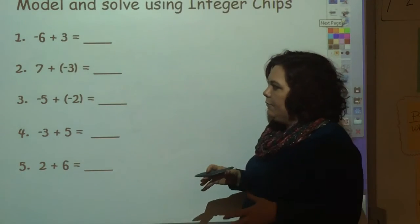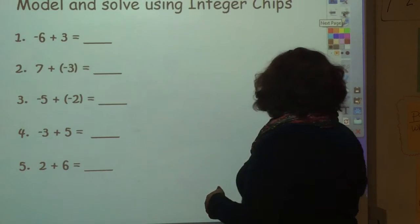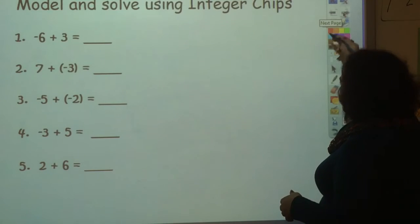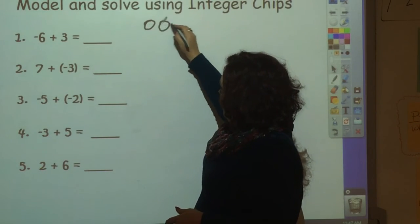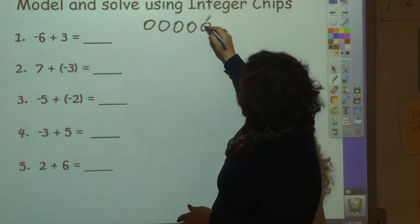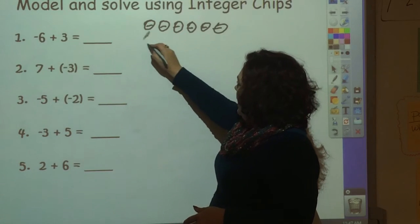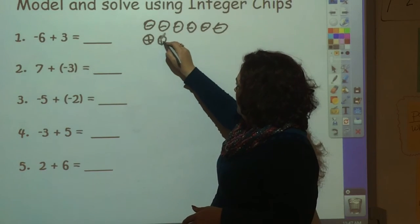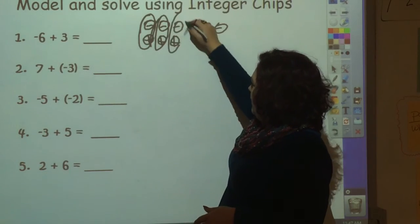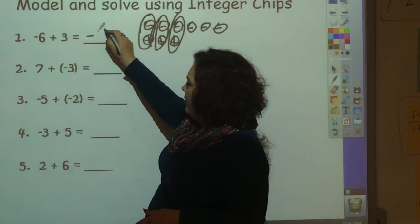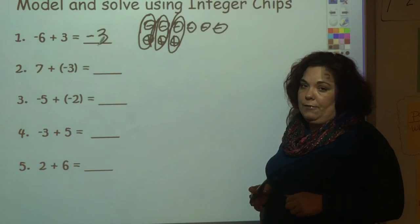So here are some problems for you to do using integer chips or actually drawing it out. I'll do the first one because you're not going to have integer chips to show you. So you have six negatives. I put negative, negative, negative, negative, negative, negative. And three positives. And these zero pair, these zero pair, these zero pair. So I'm left with negative three. That gives you an idea of how to model with the integers.